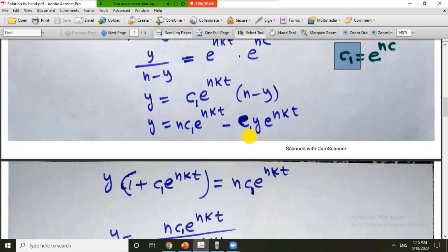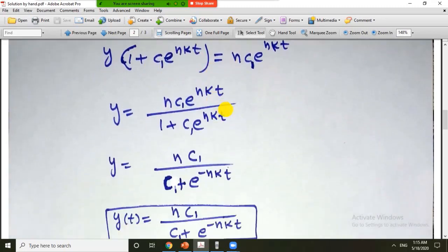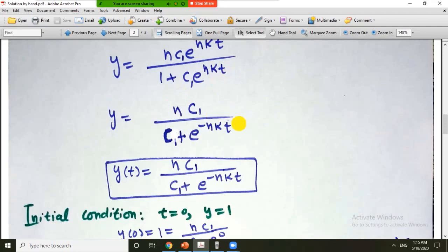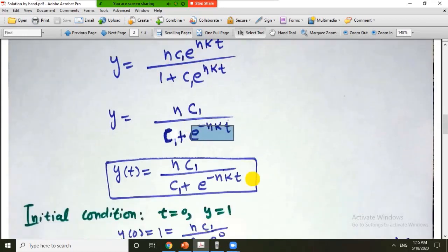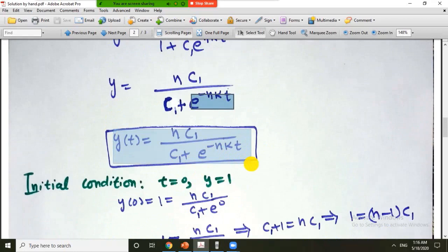And now we need to find y explicitly in terms of x. So this is straightforward calculation. We can write y is equal to n c1 e raised to the power nkt divided by 1 plus c1 e raised to the power nkt. We can divide by e raised to the power nkt to simplify it further. So we will have nc1 and this will be just c1 now, and we will have e raised to the power minus nkt. So this is our general solution to the differential equation.